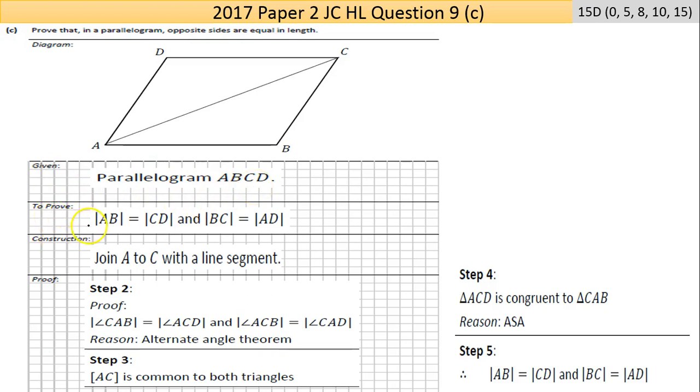and to prove then that the length - these bars here mean the length - proving that the length of |AB| = |CD| and the length of |BC| = |AD|. If you can do that, you prove that it's a parallelogram.